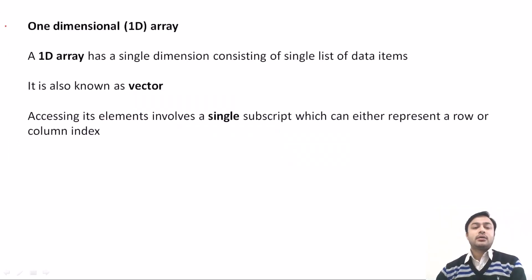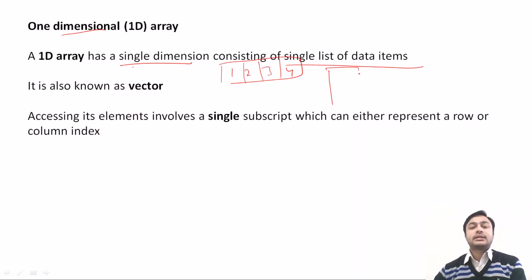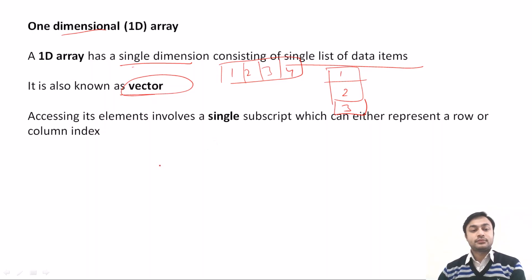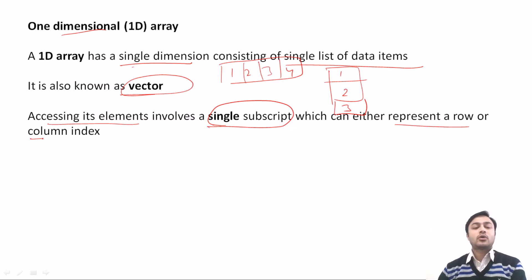In a one-dimensional array, the dimension is 1. It has only a single dimension that consists of a single list of data items, such as 1, 2, 3, 4. It is also known as a vector. To access an element, you have to use a single index value or single subscript, which can represent either a row or column index.